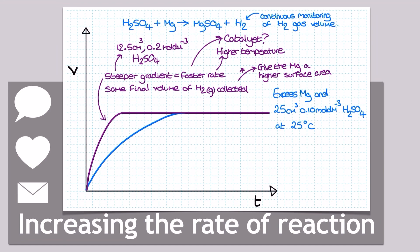They would all increase the rate of this reaction and cause the line to have a steeper gradient. They would also cause the line to plateau sooner and the same final volume of hydrogen gas to be formed as the total moles of sulfuric acid used, the limiting reagent, don't forget, did not change.